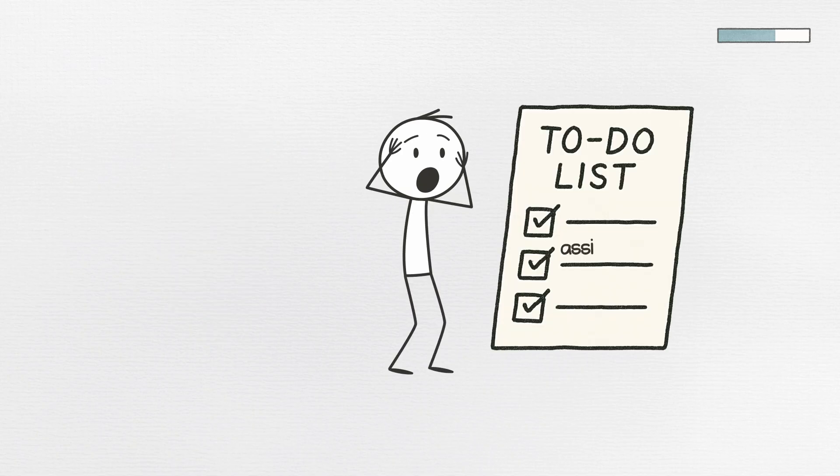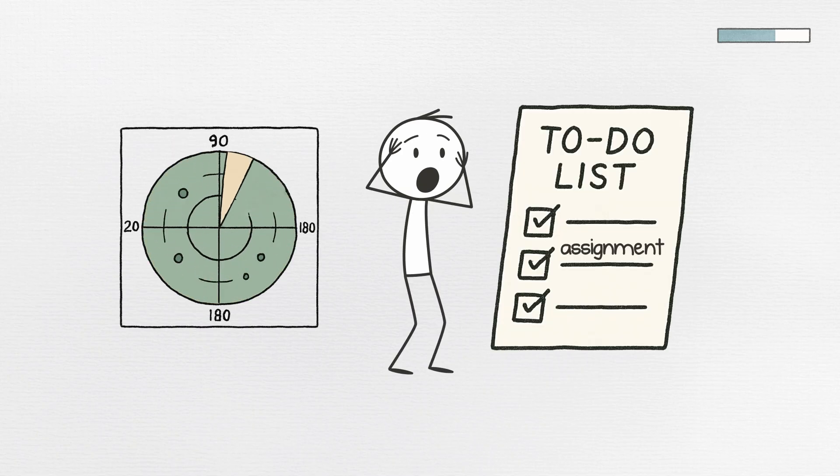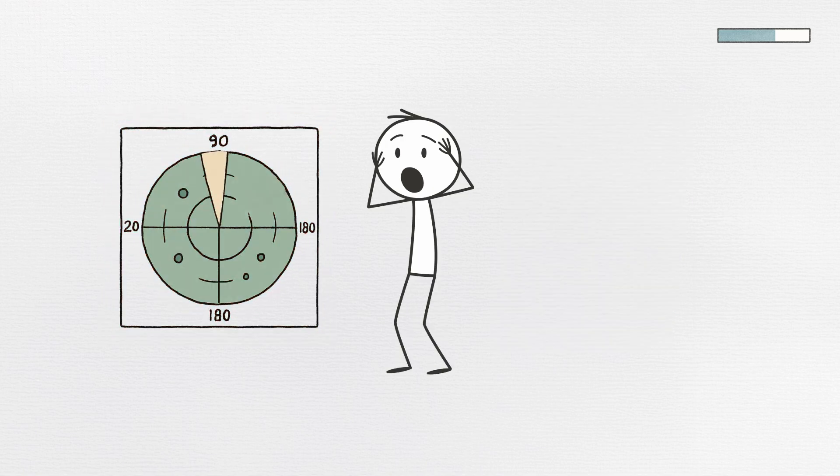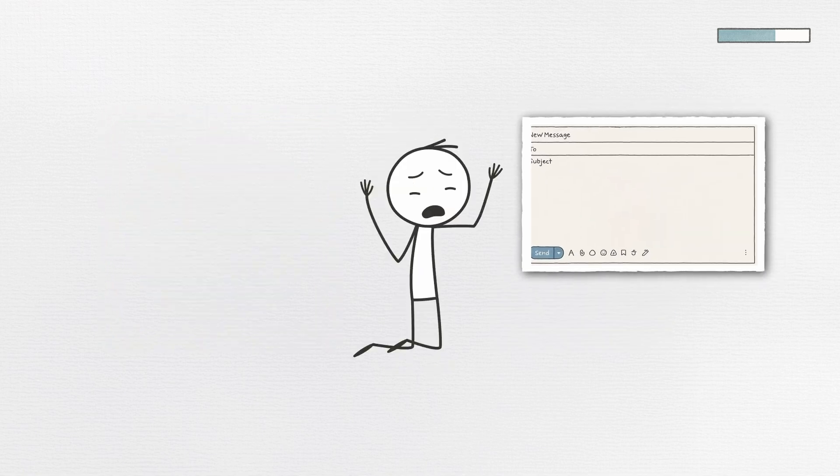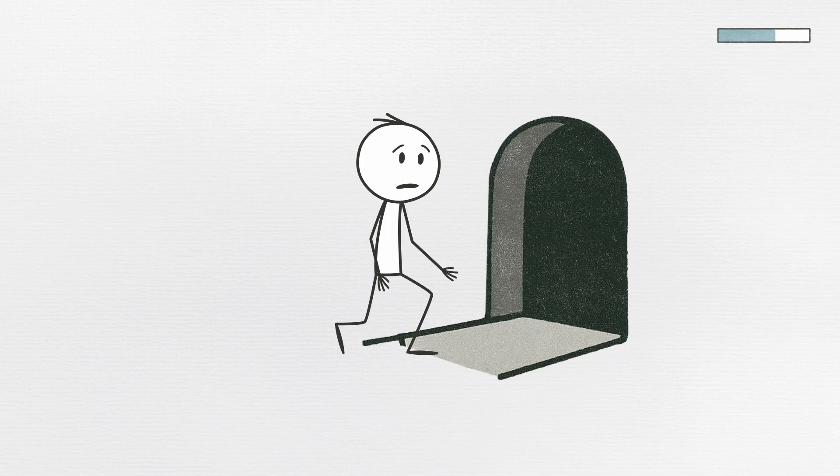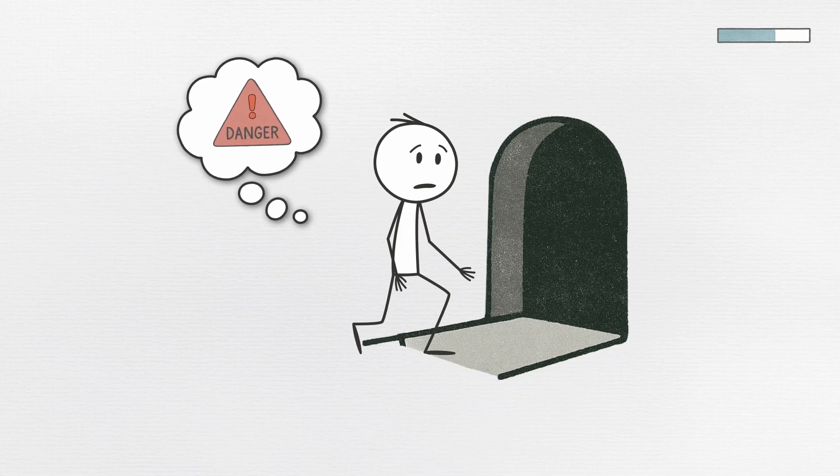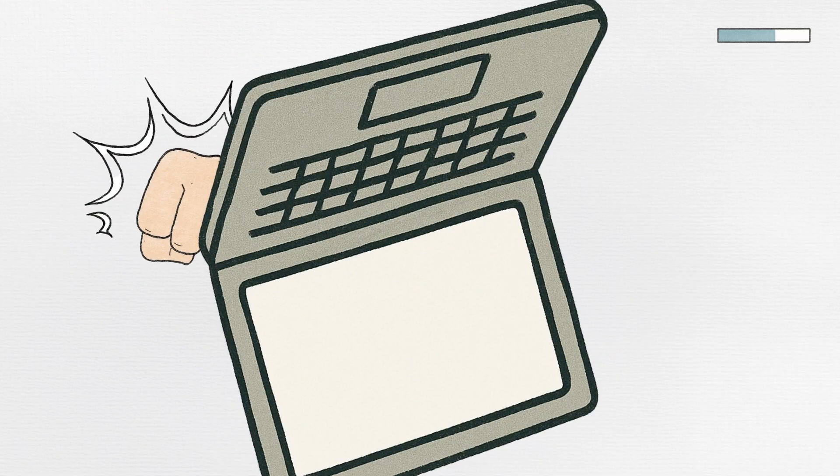When you look at that big, uncertain task sitting on your to-do list, your threat detection system starts flashing warning lights. Suddenly, writing a simple email feels as dangerous as walking into a dark alley. Your fight-or-flight response kicks in, and since you can't exactly punch your laptop, flight becomes the obvious choice.